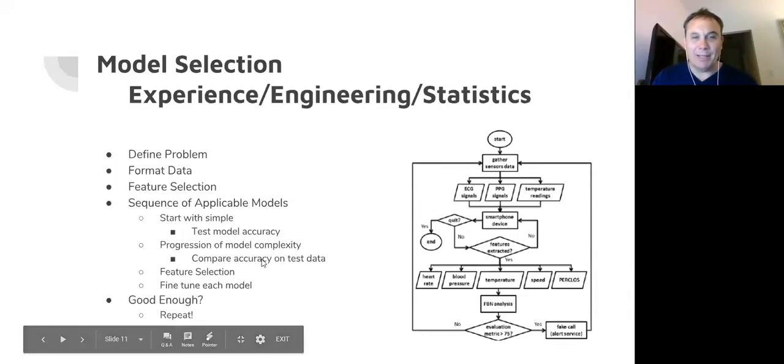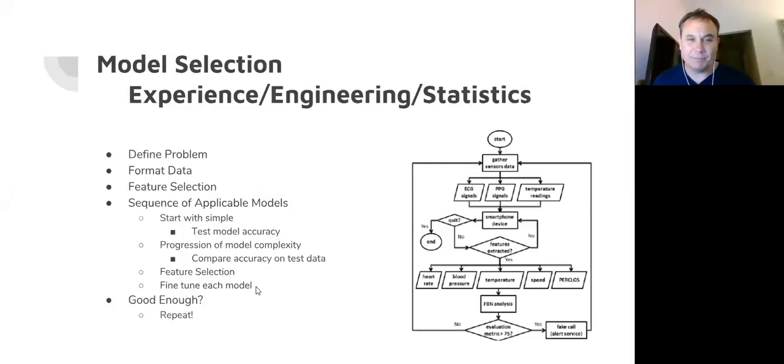So you might get to a certain point and realize, I need to really look at what features, what are my inputs, and work that down a little bit to get more accurate. And then something you can do is some tuning, hyperparameter tuning on a model, one of the more complicated models. One of the ones that you got the best results from, and see if you can get better.